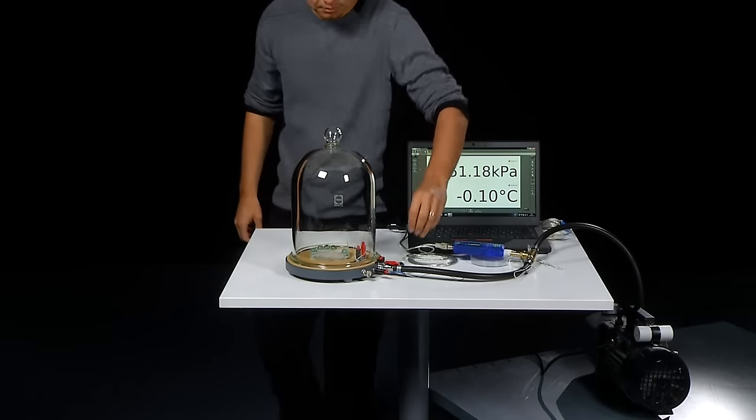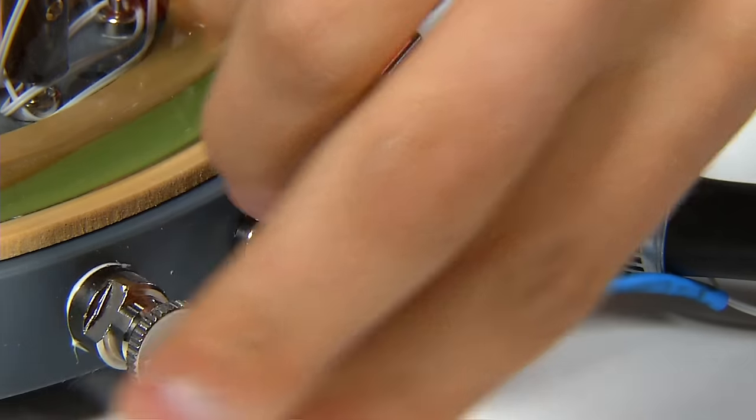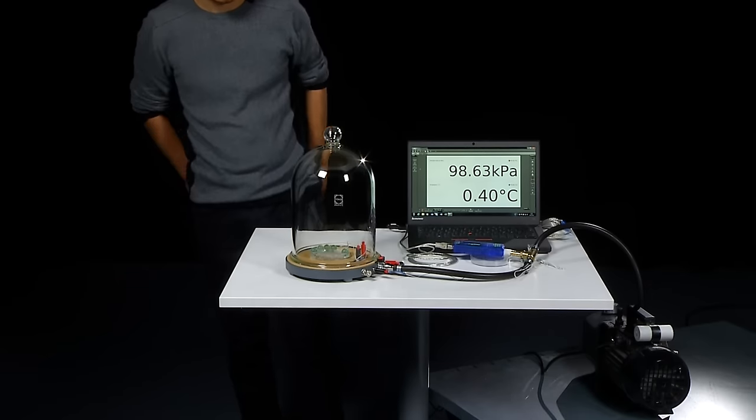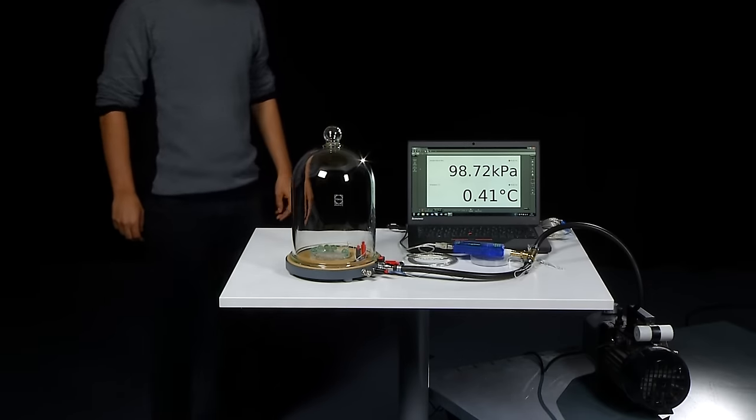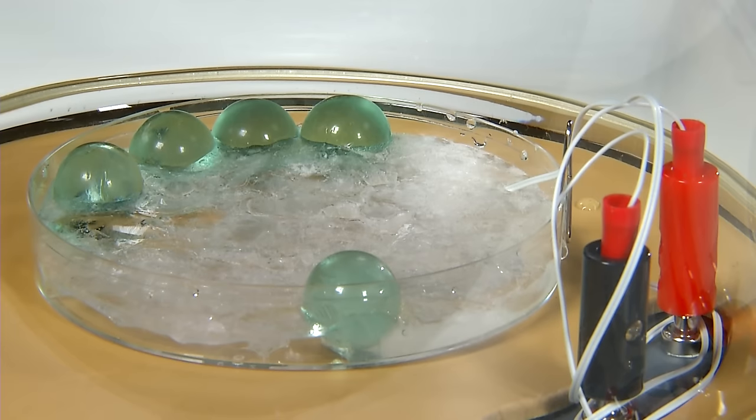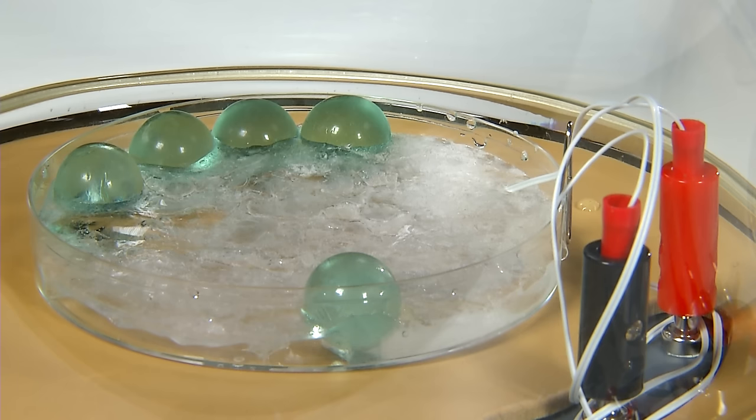Once we open the inlet valve and increase the pressure back to normal we can see that the vapor bubbles disappear first. Small droplets on the glass bell eventually evaporate and the ice in the petri dish begins to melt.